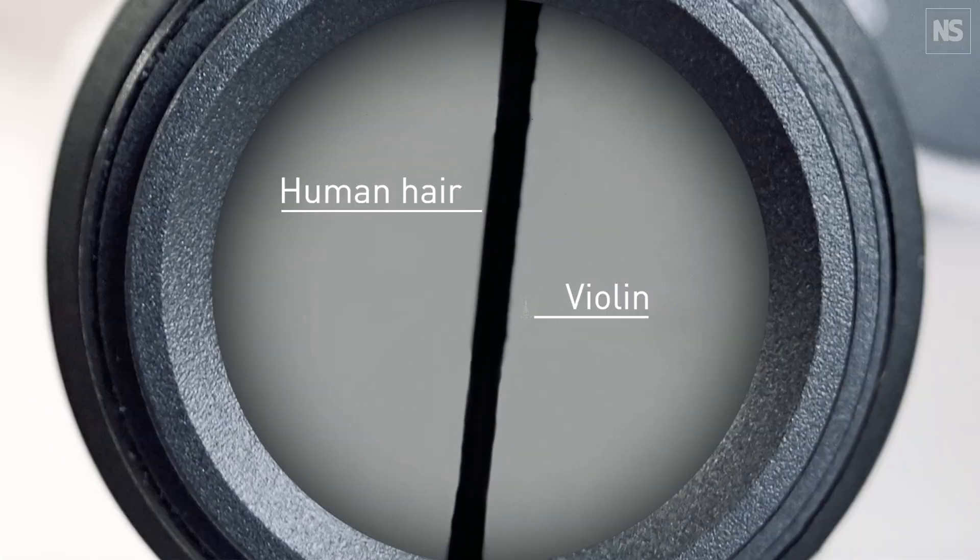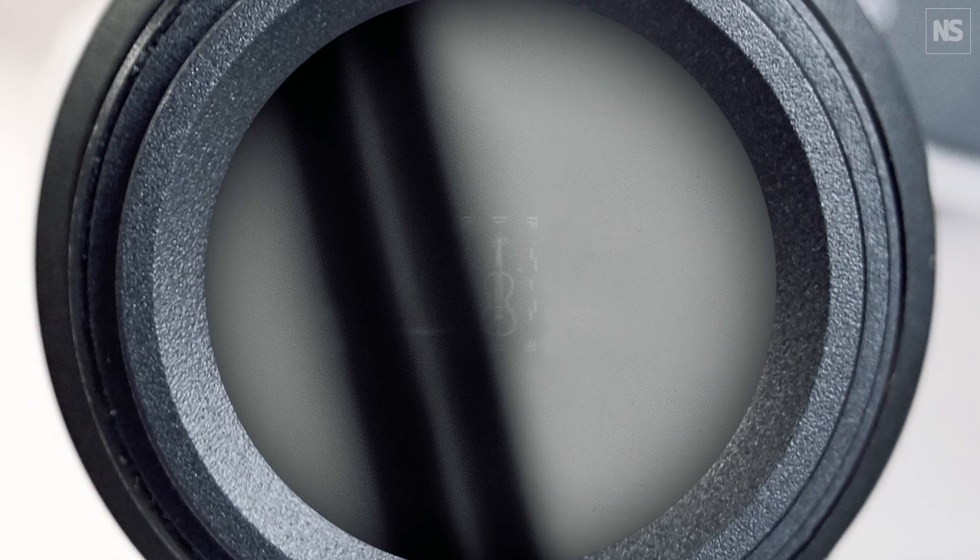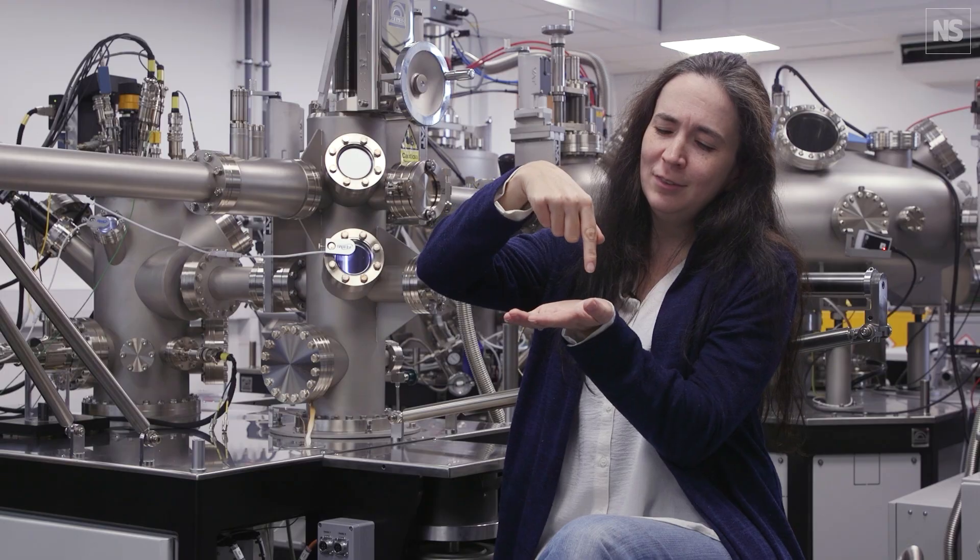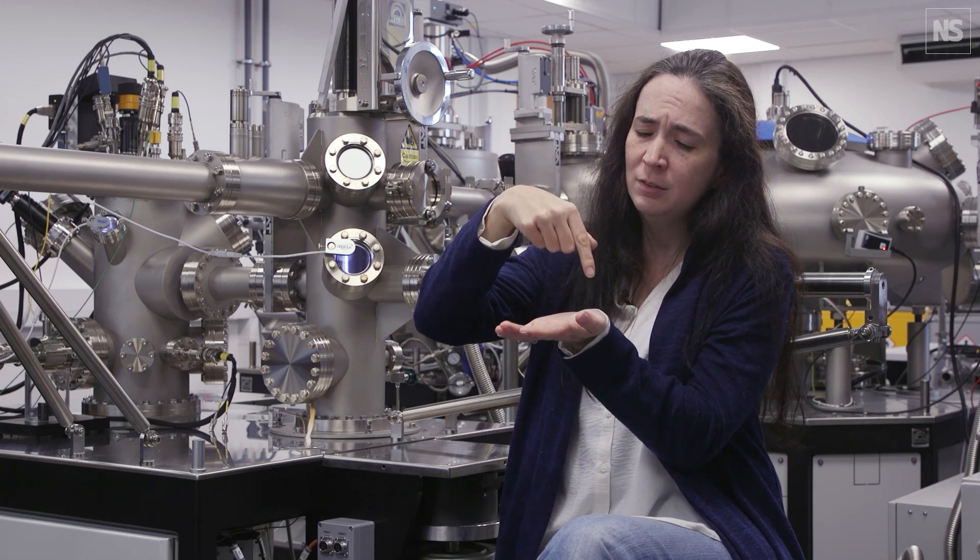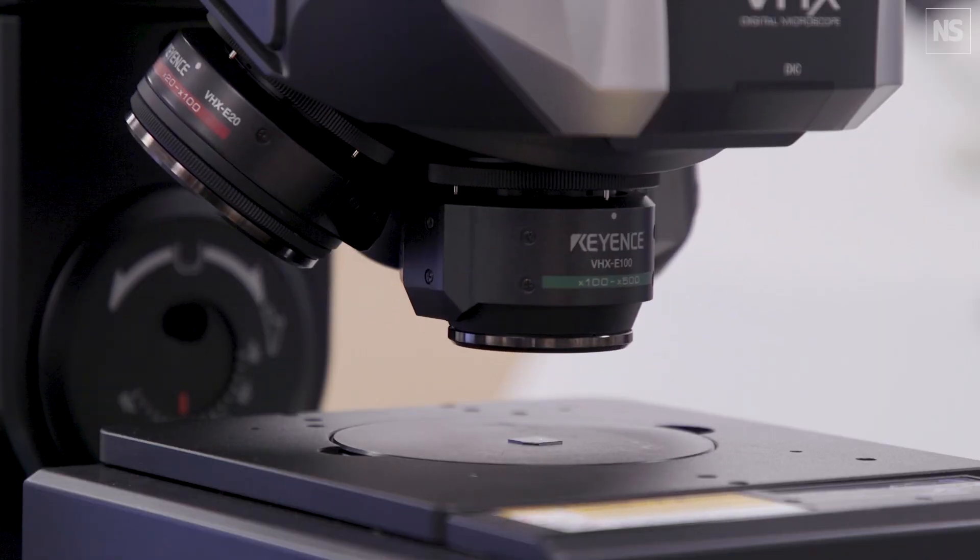If you take the average human hair, something between 15 and 120 microns, it's smaller than that. You have to use the interaction of this needle with that material. So you've got these atomic interactions to then see what you've patterned.